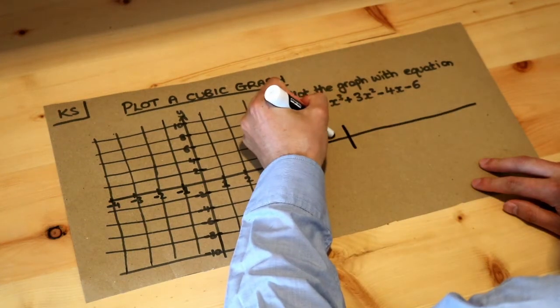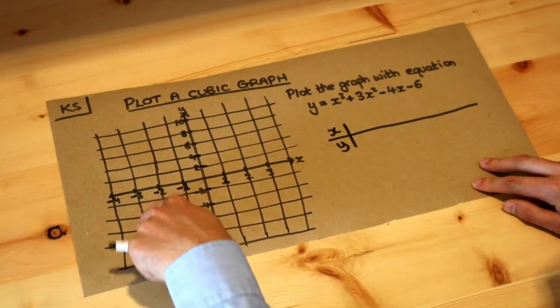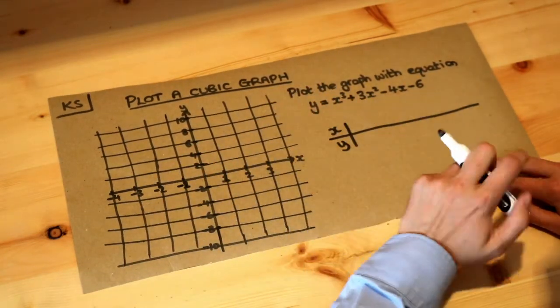So let's plot a table of values. We'll choose different values of x and work out the y for each using this equation, and then we're going to plot these points on the axis.